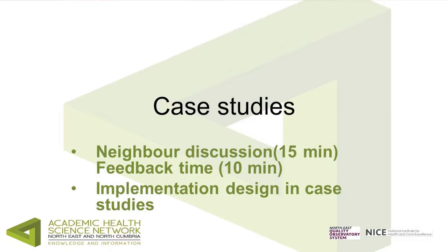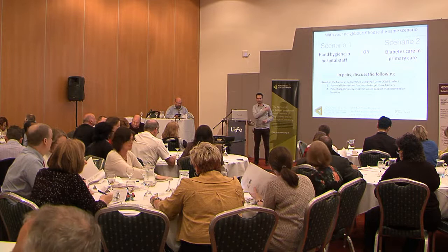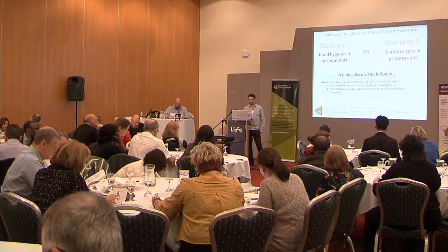The exercise asks participants to take the barriers identified this morning and identify which intervention functions from the behavior change wheel might be appropriate for addressing them, and which policy categories would likely support those. Use the two matrices in your handbook that link the two together. You can use the hand hygiene barriers Jeremy identified if you need inspiration. We'll give you 15 minutes and then get feedback about the process.